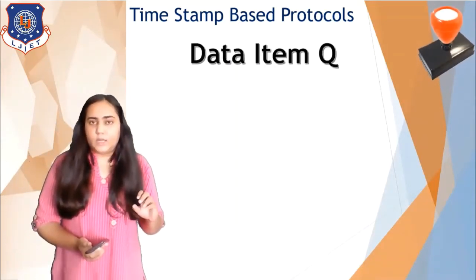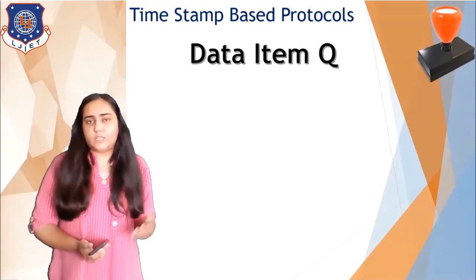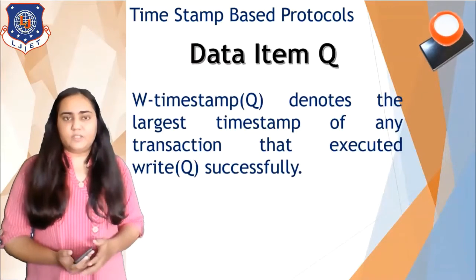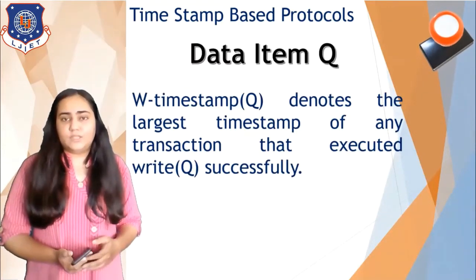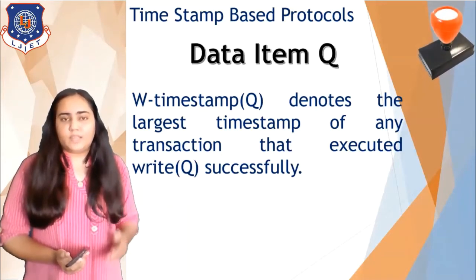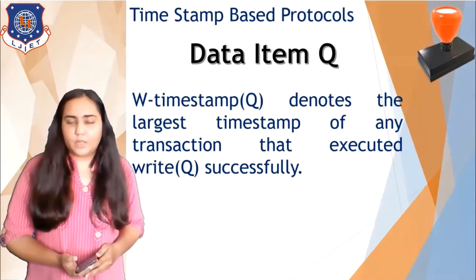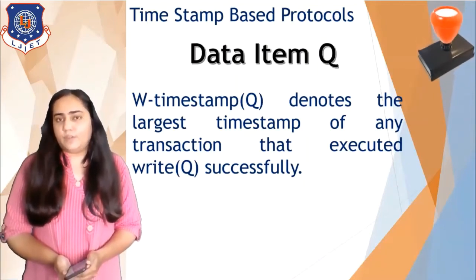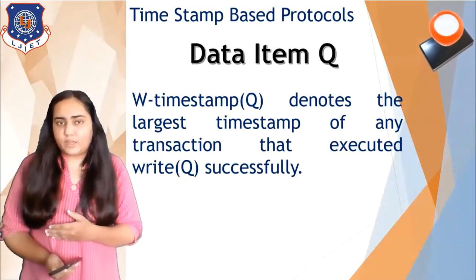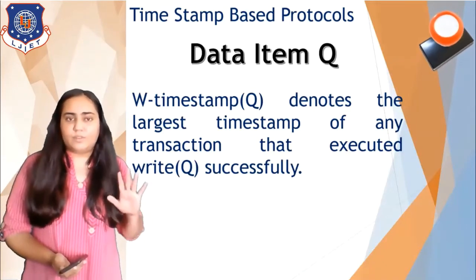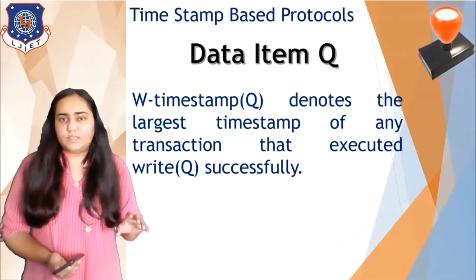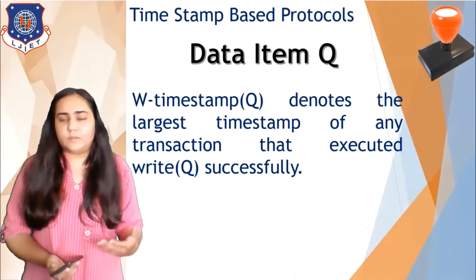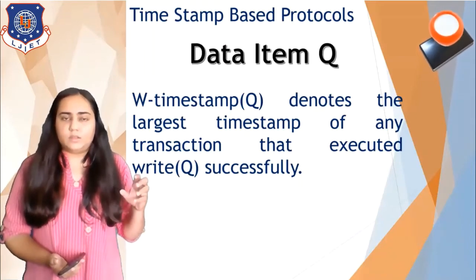Transactions are not the only things given timestamps — data items are given timestamps too. Consider a data item Q. This data item is given two timestamps. The first is the W-timestamp, which denotes the largest timestamp of any transaction that executed a write(Q) operation successfully. So if Q was written by five transactions with timestamps one through five, then Q's W-timestamp will be five. If another transaction later comes with timestamp six, the W-timestamp becomes six.